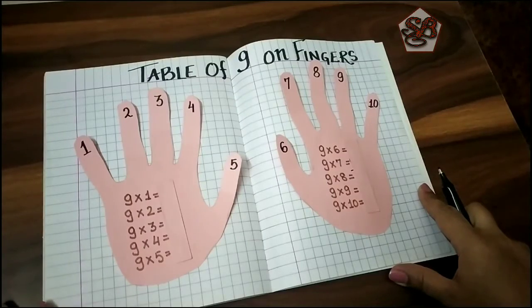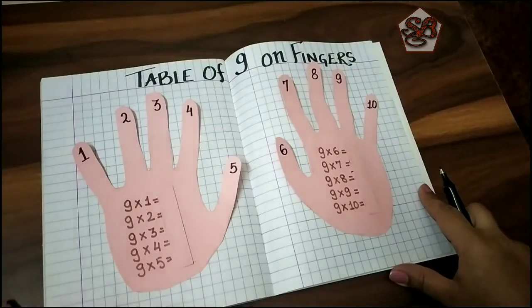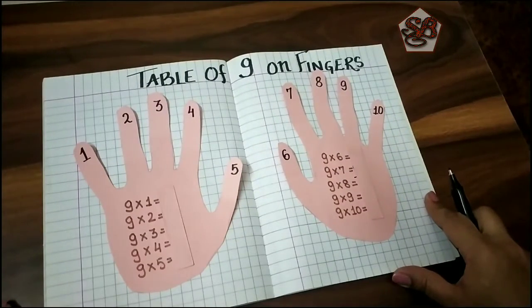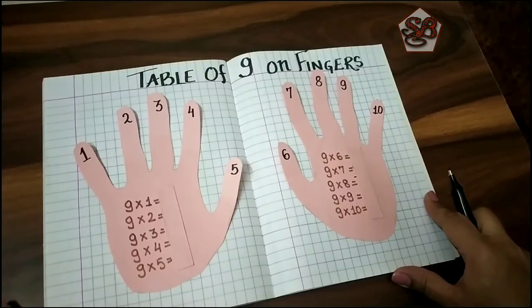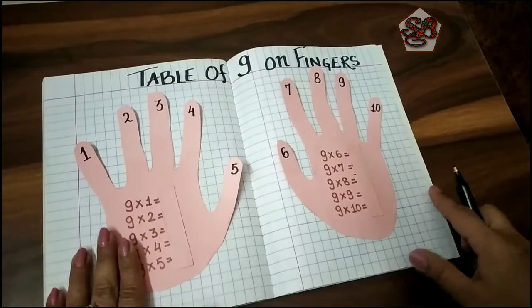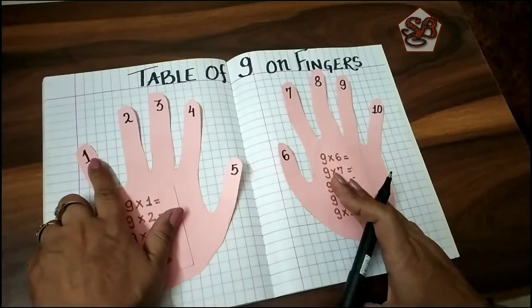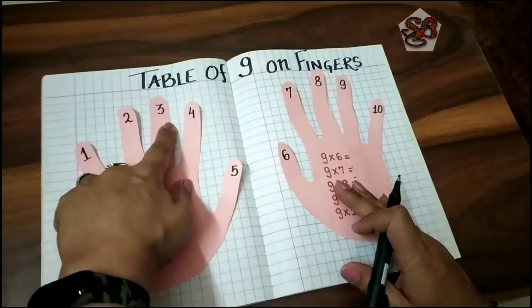Hello children, welcome to your maths class. In today's video we will learn a fun way to learn table of nine on fingers. Two hands we all have and ten fingers. We can number them as 1, 2, 3, 4, 5, 6, 7, 8, 9, and 10.